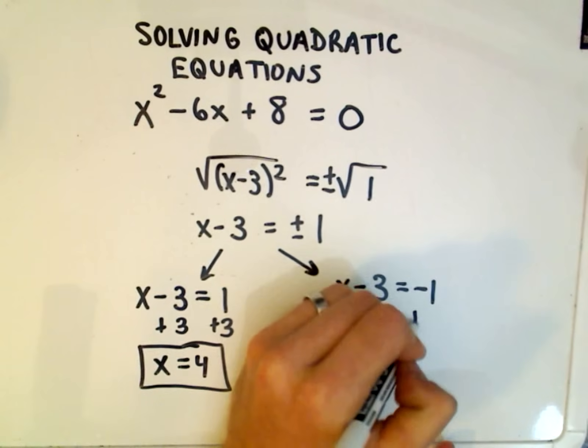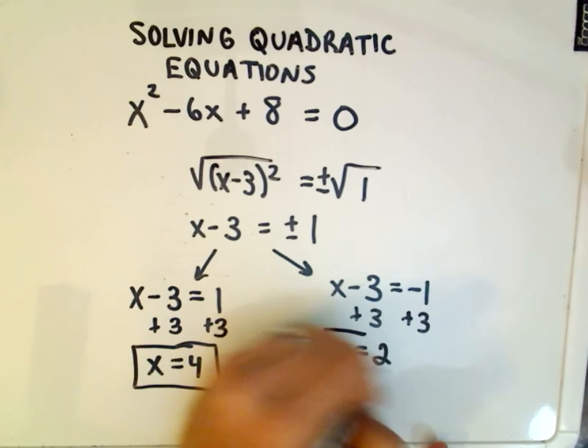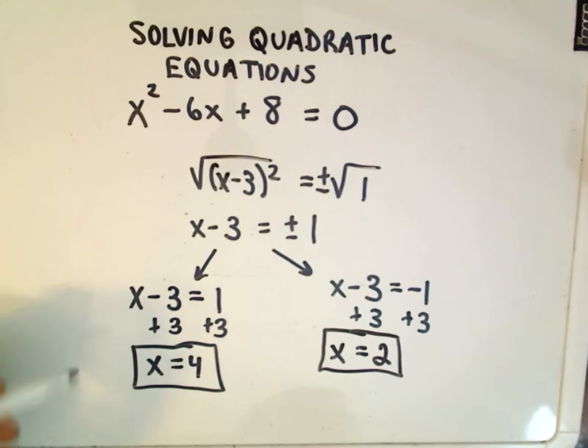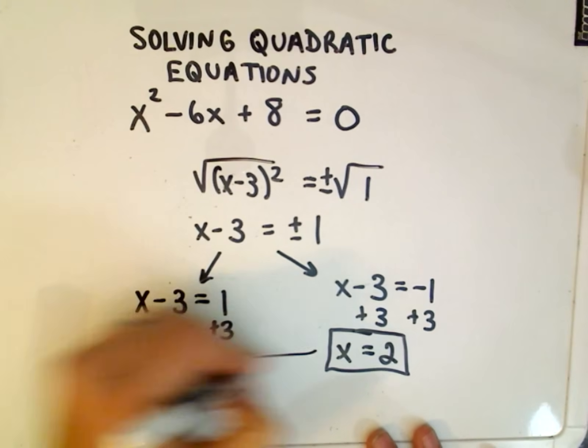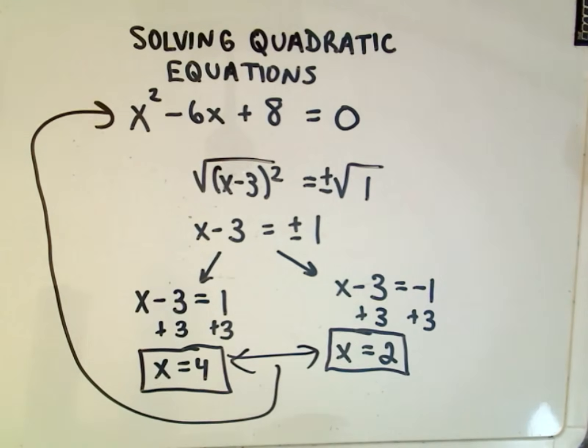And we'll get x equals positive 4 as one of our solutions. If you add positive 3 to the other side, we'll get x equals positive 2 as our other solution. And you can check that if you do plug 2 and 4 back into the original equation, you will get 0 out. So this will be example 1.